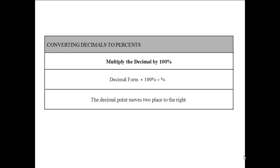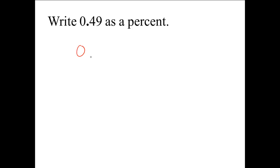Converting decimals to percents. When we convert a decimal to a percent, we multiply the decimal by 100%. The decimal point in the decimal form will move two places to the right when we change it to a percent. Write 0.49 as a percent. To change a decimal to a percent we multiply by 100%. So 0.49 times 100% is equal to 49% — the decimal point moves two places to the right.